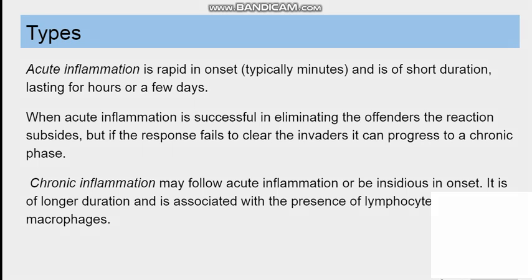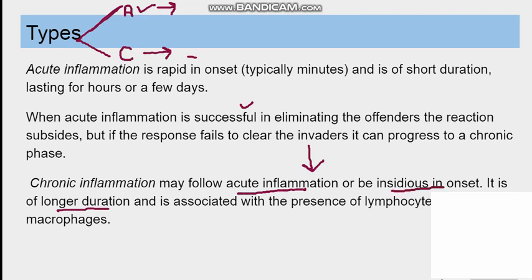There are two types of inflammation: acute inflammation and chronic inflammation. Acute inflammation is rapid in onset and lasts for a short duration, mainly hours or a few days. Chronic inflammation is slower in onset and lasts for a longer duration. If acute inflammation successfully eliminates the stimulus for infection, it resolves; otherwise, it progresses into chronic inflammation, which can either follow acute inflammation or be insidious in onset from the beginning.